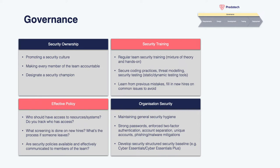You may also want to designate one person as the security champion, who ensures the team continues to be aligned with security objectives and can give advice to other members. Closely linked to this is making sure effective security training is in place — do members of the team have the right knowledge and skills to avoid common security pitfalls in line with best practices? Ideally, get the team on a training or workshop with hands-on practical elements so they can actively try some of the techniques. It's also important the team learns from previous mistakes, with knowledge sharing cascading to everyone, including new hires.